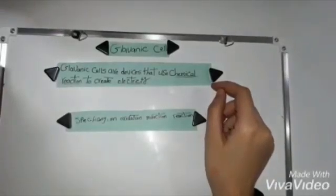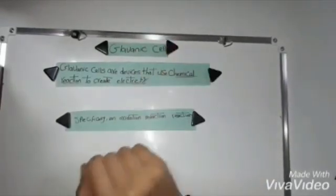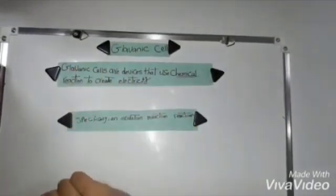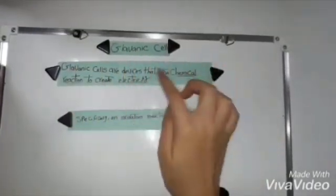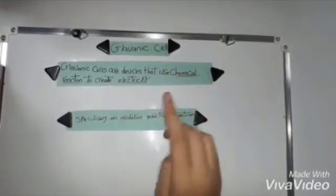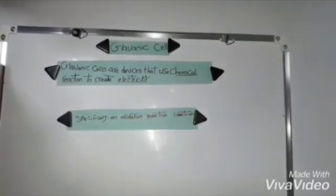Hello everyone, in this video we are talking about galvanic cells and its application. Number one, what are those galvanic cells? Galvanic cells are devices that use chemical reactions to create electricity. Specifically, this reaction is an oxidation reduction reaction.